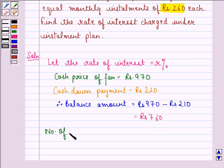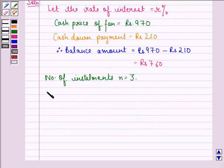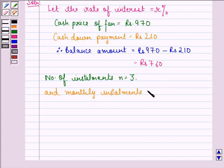Now, number of installments n is given to be equal to 3, and monthly installments P is equal to Rs. 260.